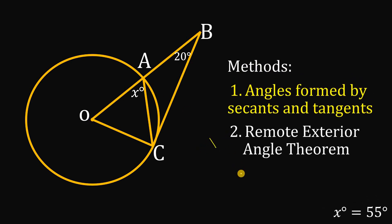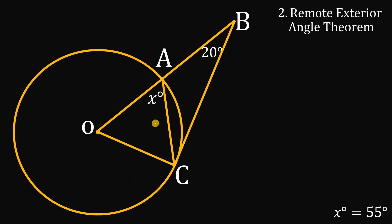For method two, using the remote exterior angle theorem: notice that OA and OC are both radii of circle O, meaning they are congruent. Therefore triangle AOC is an isosceles triangle, and its base angles are equal — so if one base angle is X, the other base angle is also X degrees. Since segment BC is tangent to circle O, we have a 90-degree angle there. Let's call angle B as angle Y.